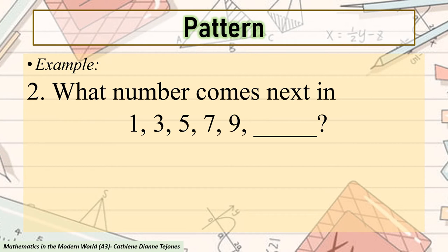Looking at the given numbers, the sequence is increasing, with each term being 2 more than the previous. 1 plus 2 equals 3. 3 plus 2 equals 5. 5 plus 2 equals 7. 7 plus 2 equals 9. Therefore, the next term should be 9 plus 2, and what is 9 plus 2? We have 11.